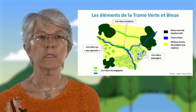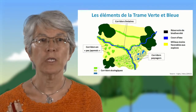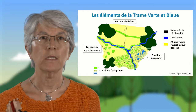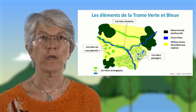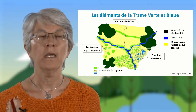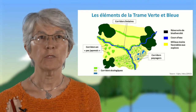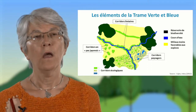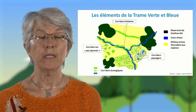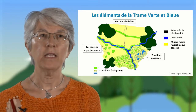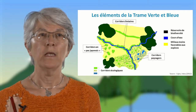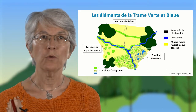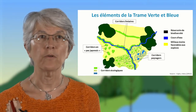La trame verte et bleue est une approche de réseau écologique basée sur des réservoirs de biodiversité, représentés ici en vert foncé sur le schéma, qui sont des milieux où les espèces peuvent effectuer tout leur cycle de vie parce que les habitats sont en quantité et en qualité suffisante pour cela. C'est généralement des espaces protégés, mais ça peut être aussi d'autres espaces qui ont été rajoutés comme réservoirs.